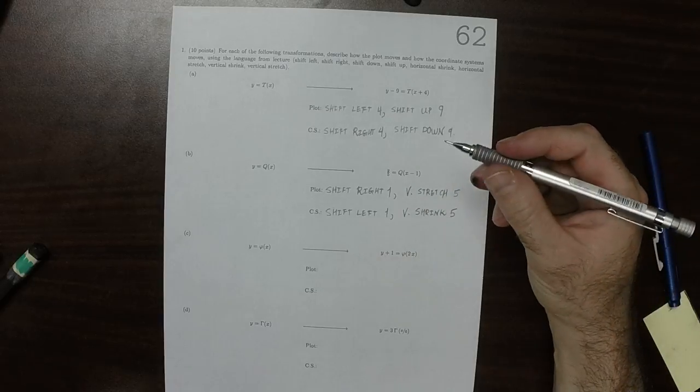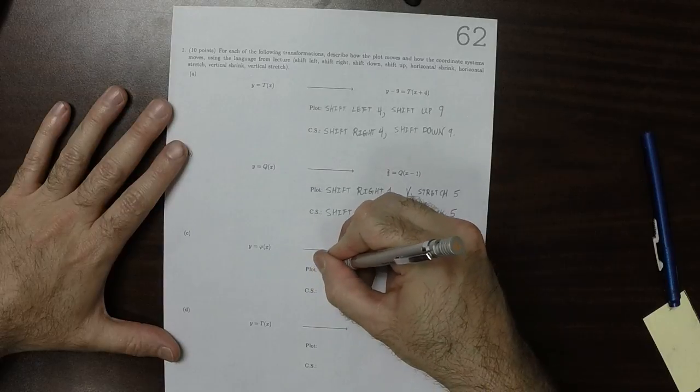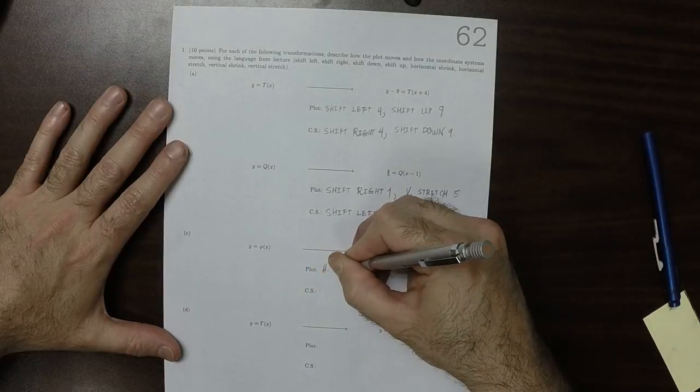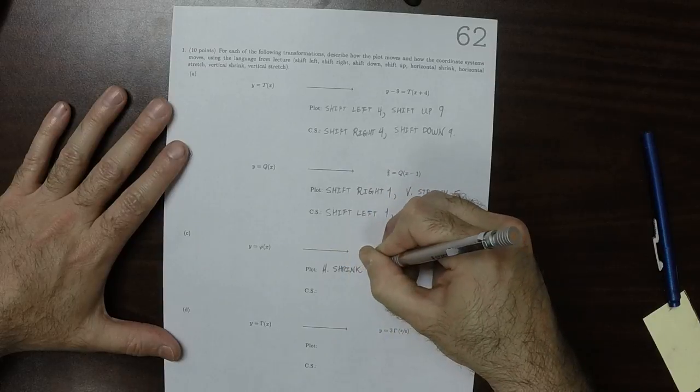So the plot is going to undergo a horizontal shrink by a factor of 2 and shift down 1.